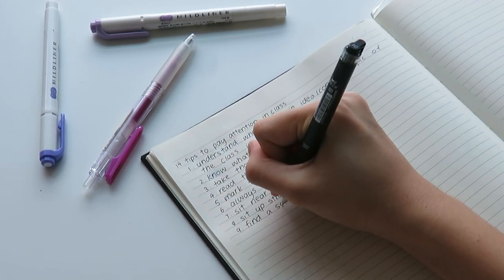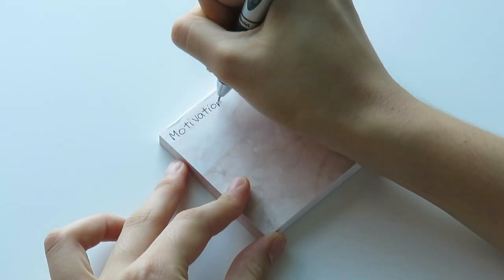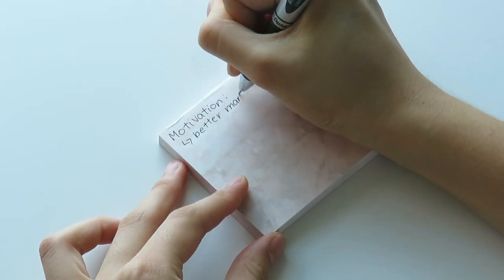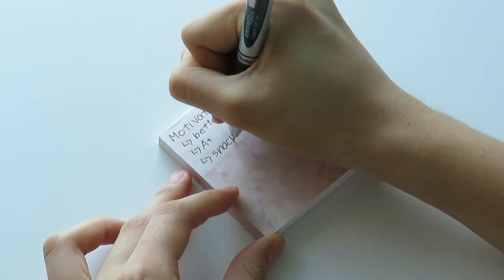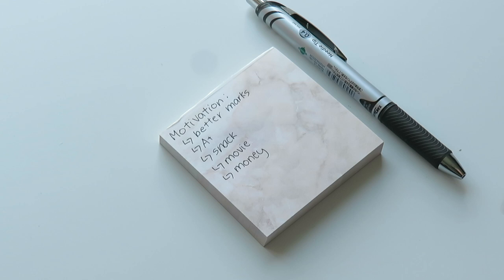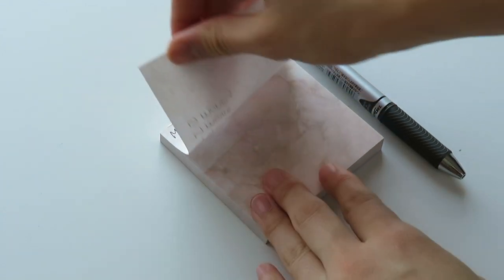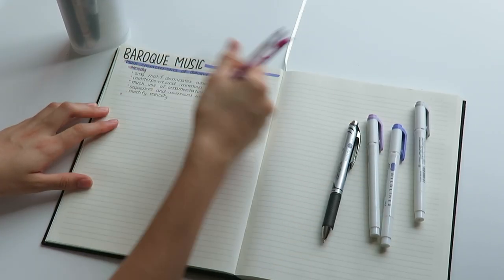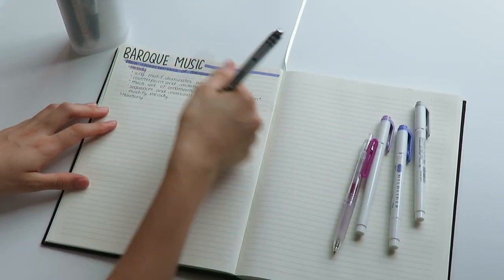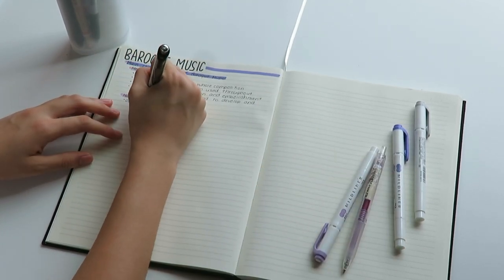The ninth tip is to find a source of motivation. This is probably one of the most important tips of this video. Motivation is absolutely essential if you want to have better focus. Some examples of motivation can include your final result, getting a much better mark than before or a little treat or some money to use. Having that little bit of motivation can completely change how much attention you pay in class for the better.